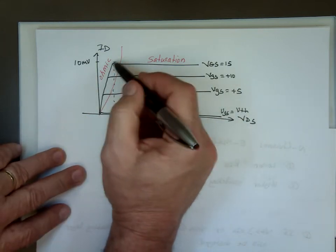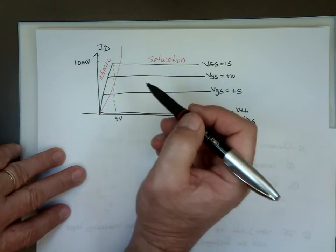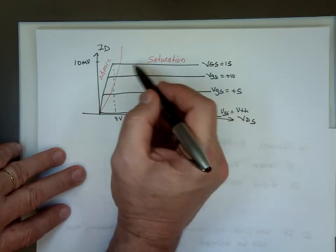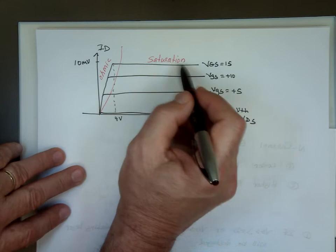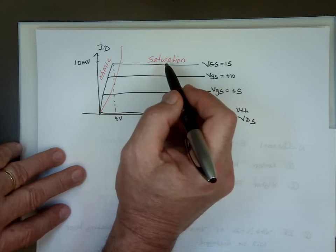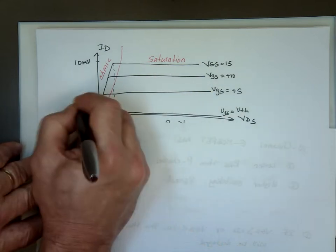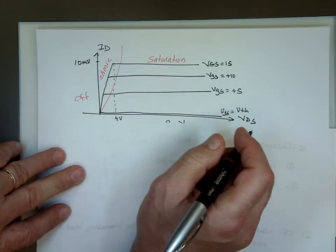When you're on this side of the graph, that's called the ohmic region. When you're on this side, that's known as the saturation region. If you're on this end, you're in the off position. There's no current going through it, zero current.